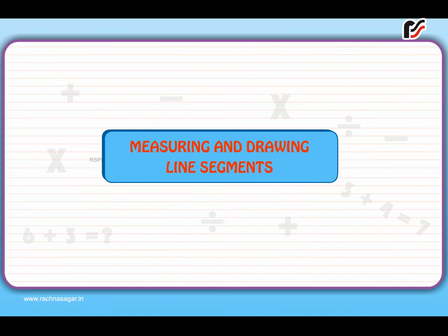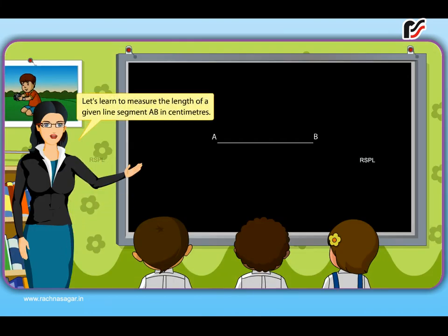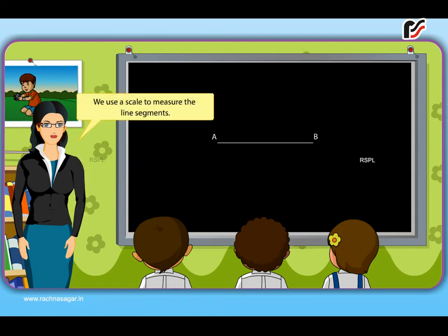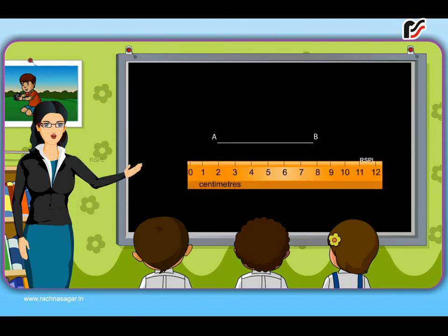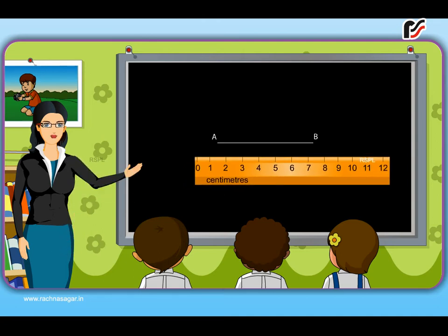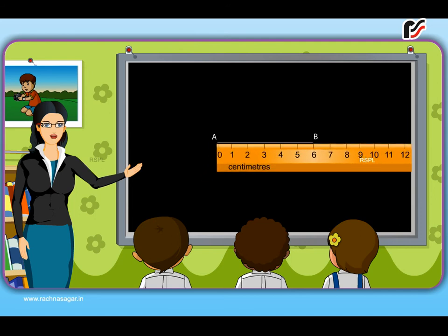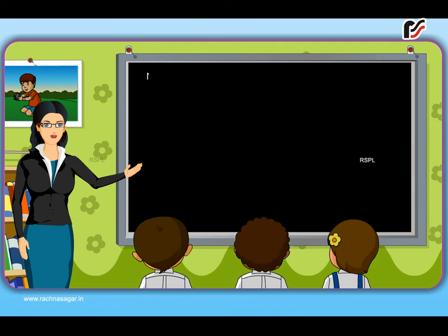Measuring and drawing line segments. Let's learn to measure the length of a given line segment AB in centimetres. We use a scale to measure the line segments. Place the edge of the scale showing centimetres along the line segment AB. Adjust the scale in such a way that the zero mark of the scale is at the point A. Read the scale at the point B. Here, the mark on the scale is at 6 centimetres. So, the length of given line segment AB is 6 centimetres.